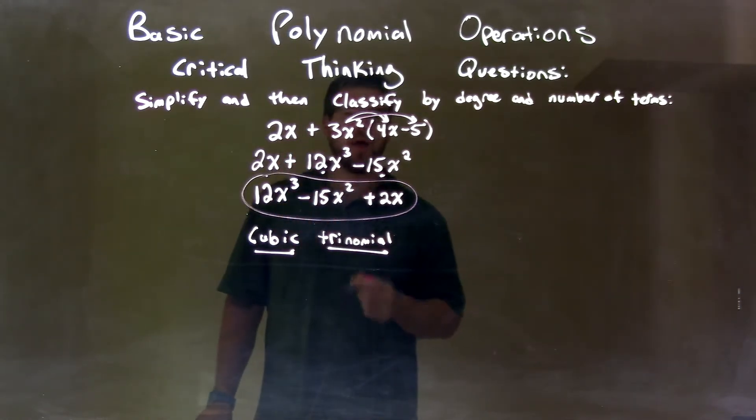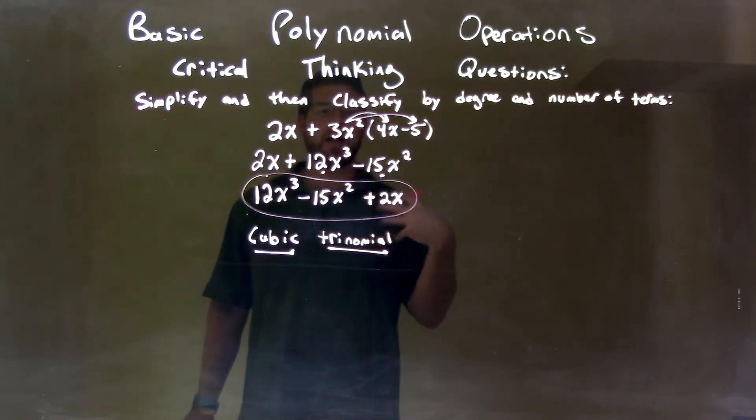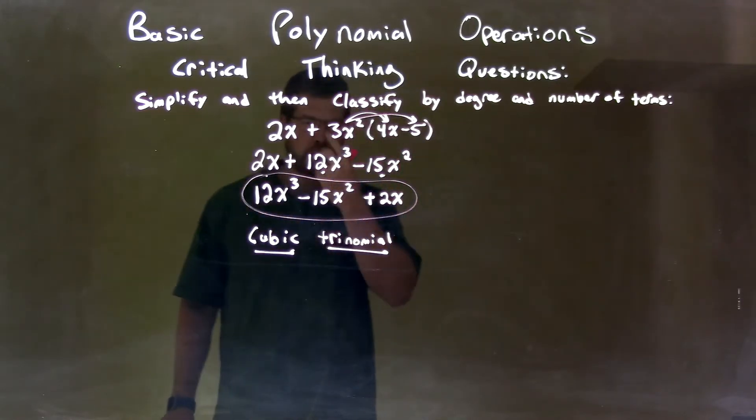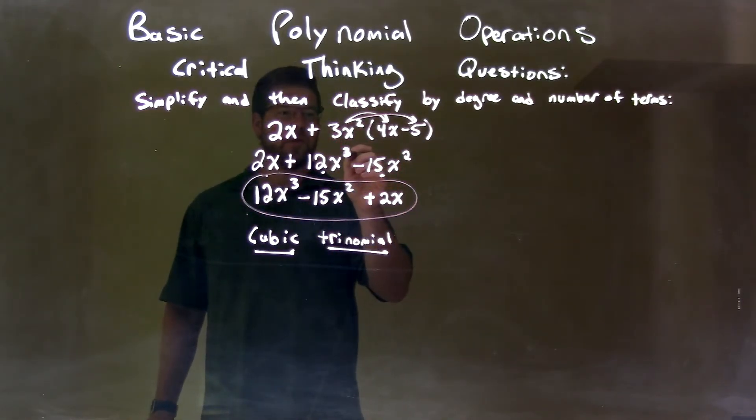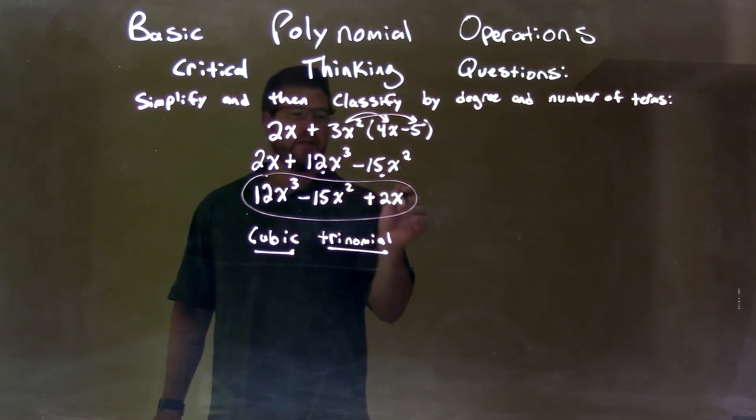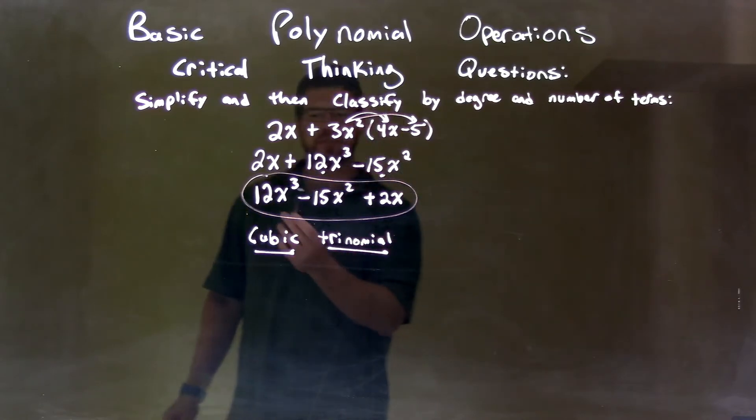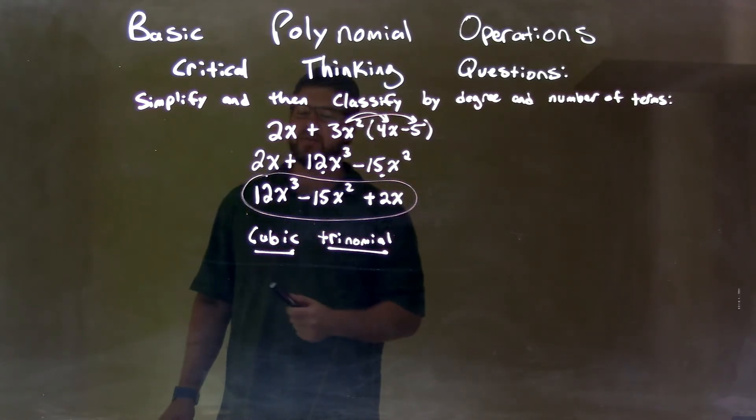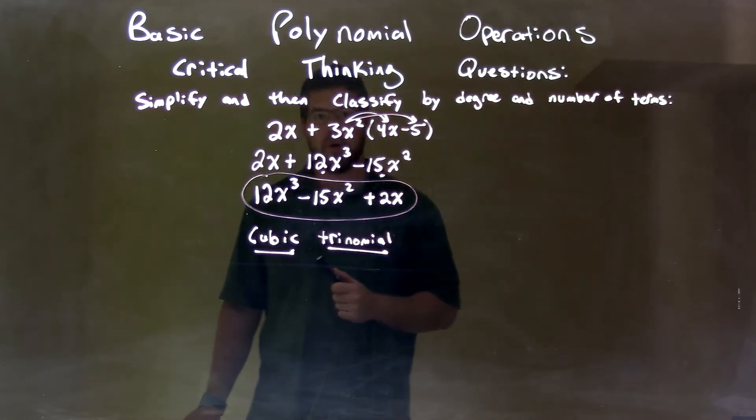I then brought down just that 2x. Now I rearranged this to have my highest degrees first. It's easier to classify that way. Highest degree was the third power, so I brought that, the 12x to the third, then the minus 15x squared, then the 2x. So we're finished our simplification at this point, which is just 12x to the third minus 15x squared plus 2x.